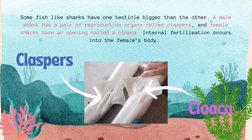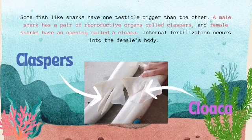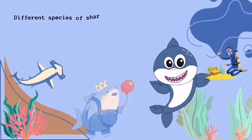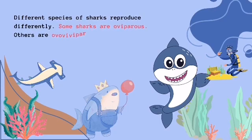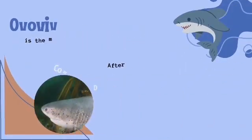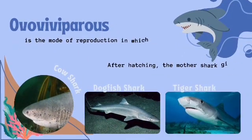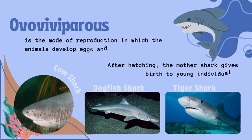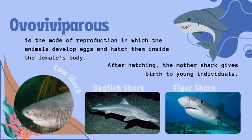Internal fertilization occurs inside the female's body. Different species of sharks reproduce differently. Some sharks are oviparous. Others are ovoviviparous. And some are viviparous. Ovoviviparous is the mode of reproduction in which the animals develop eggs and hatch them inside the female's body. After hatching, the mother shark gives birth to young individuals.